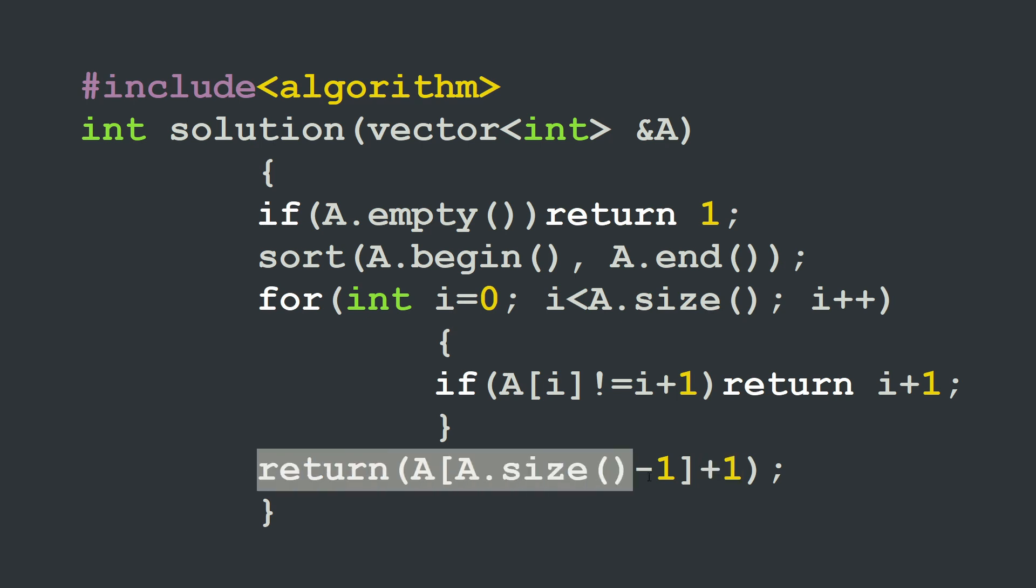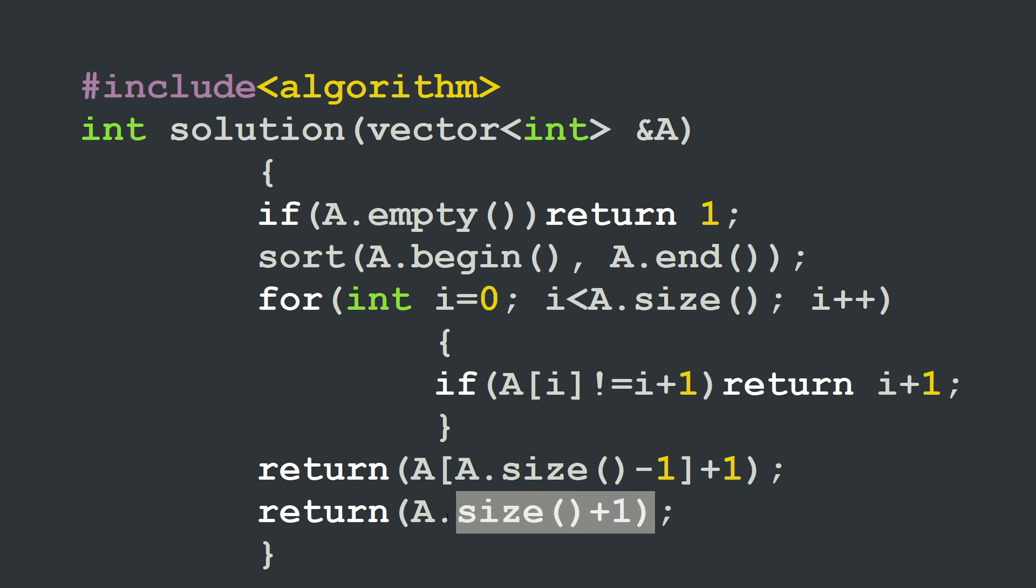Actually we can also write this in a more concise way. We can simply put return A.size plus 1. And here we are basically making use of the relation between the index and the value of the last element. So in this case we can simply comment this one, and this would work as well.